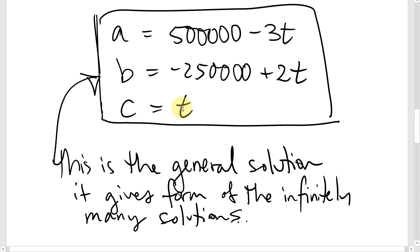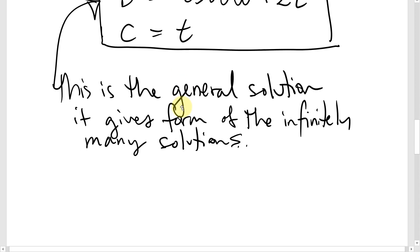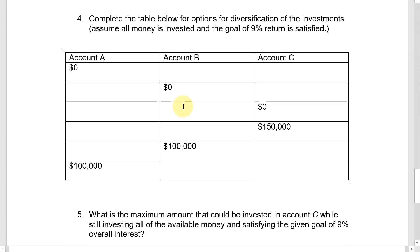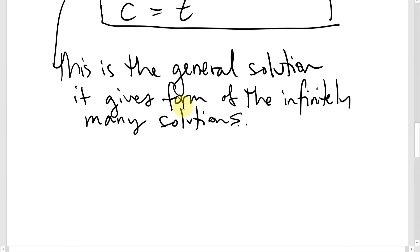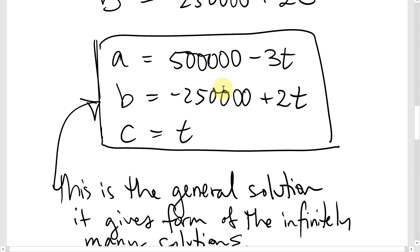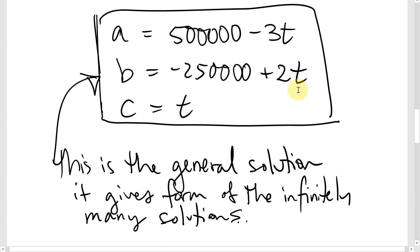We can use the general solution to fill in a table and answer further questions. One key restriction is that you can't invest a negative amount of money. For example, if t is 0, B goes negative, so t = 0 is not practical in this financial context. We expect all values to be greater than or equal to zero.